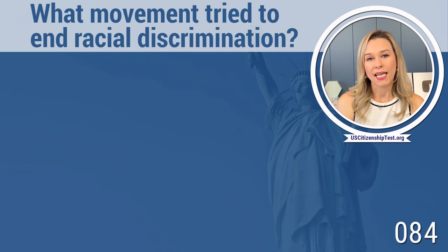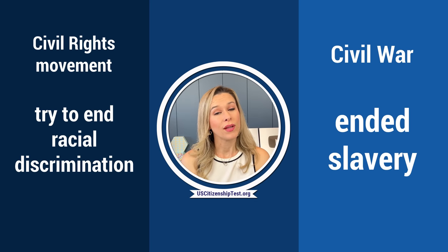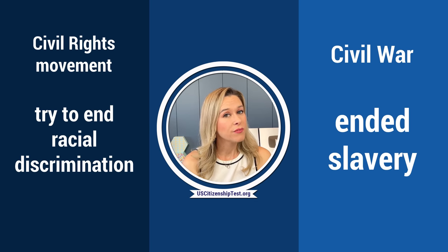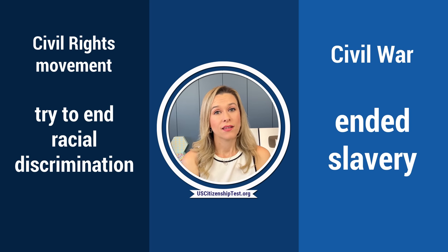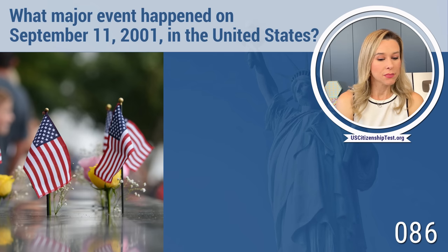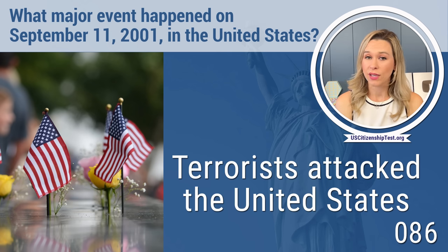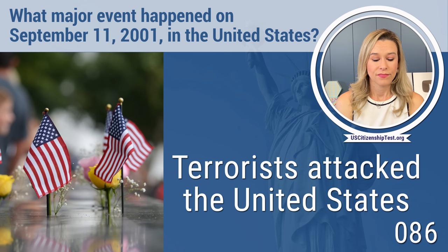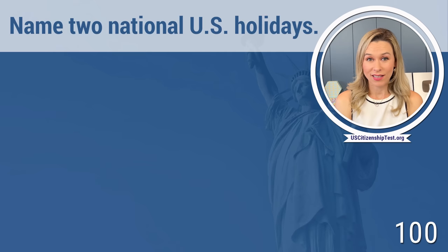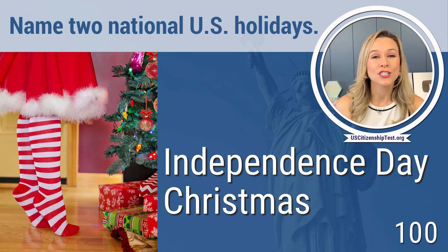What movement tried to end racial discrimination? The civil rights movement — and don't confuse that with the Civil War. The civil rights movement tried to end racial discrimination, and the Civil War was over slavery. What major event happened on September 11, 2001 in the United States? Terrorists attacked the United States. Name two national U.S. holidays. Independence Day and Christmas.